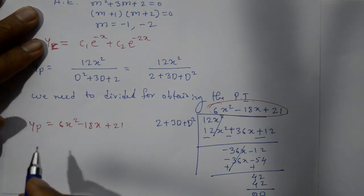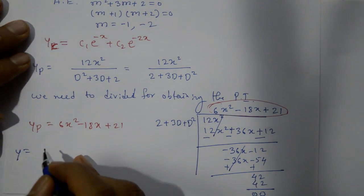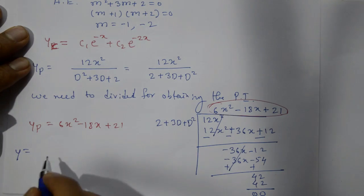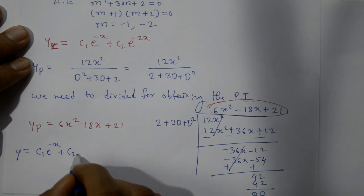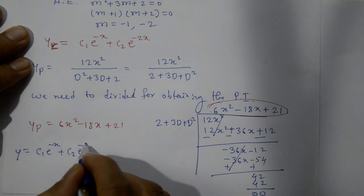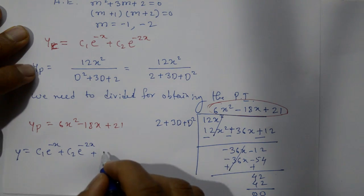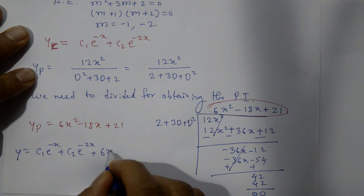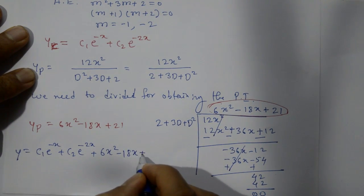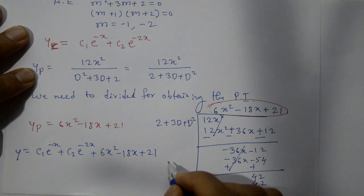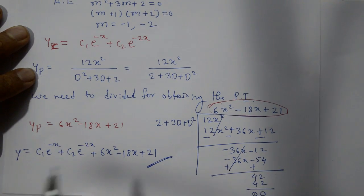The complete solution is y = yc + yp = c₁e^(−x) + c₂e^(−2x) + 6x² − 18x + 21. This is the required complete solution.